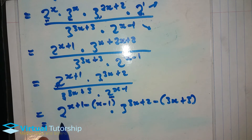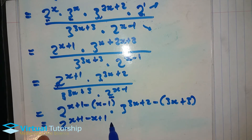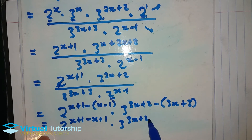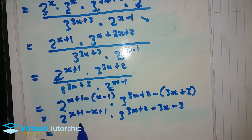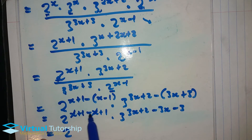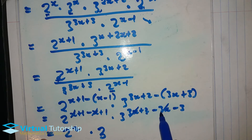Simplify the exponents by solving the brackets. For base 2: x plus 1 minus x plus 1 gives 2. For base 3: 3x plus 2 minus 3x minus 3 gives negative 1. So it's 2 squared times 3 to the negative 1. That's 4 times 1 over 3, giving a final answer of 4 over 3.